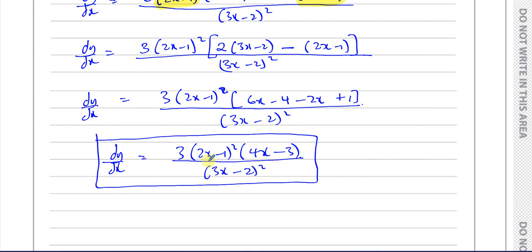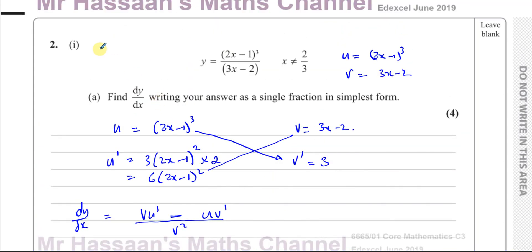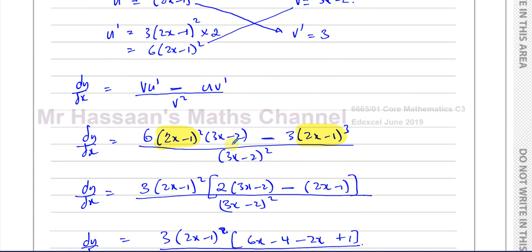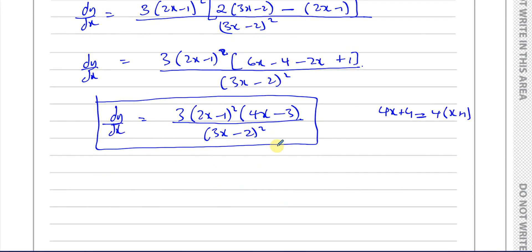Something expanded and something factorised are both considered simplest form — for example, 4x + 4 and 4(x + 1) are both equal and both simplified. So the answer to part A is: dy/dx = 3(2x − 1)²(4x − 3) over (3x − 2)².